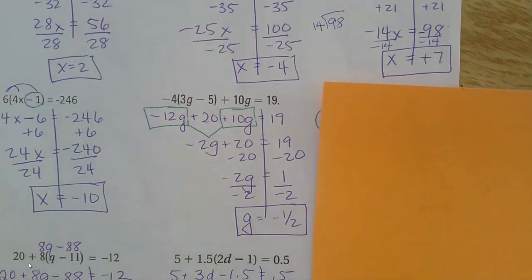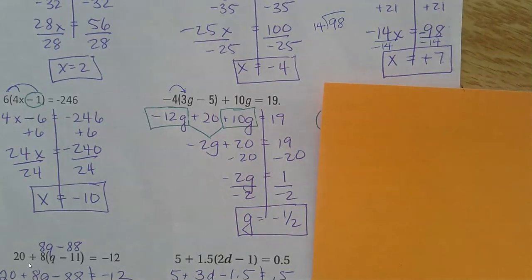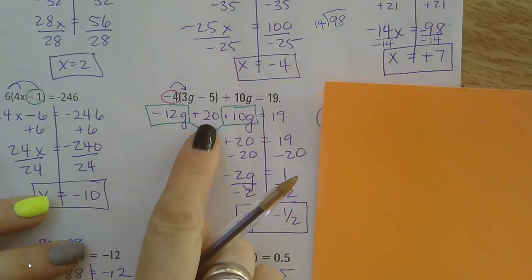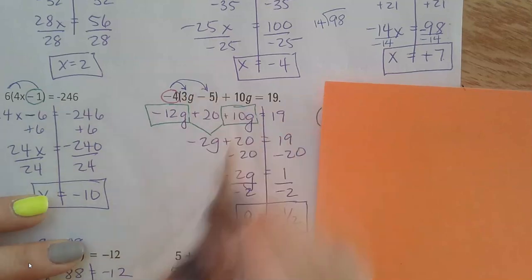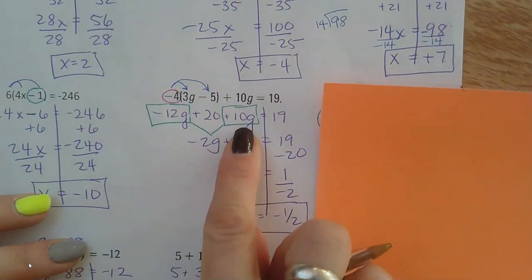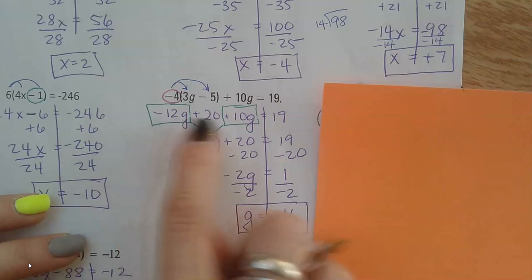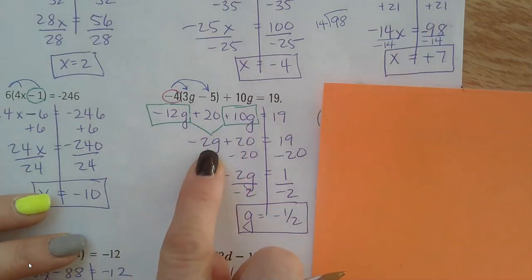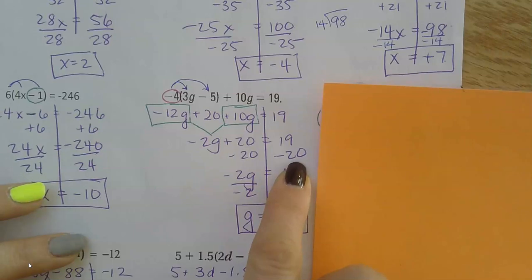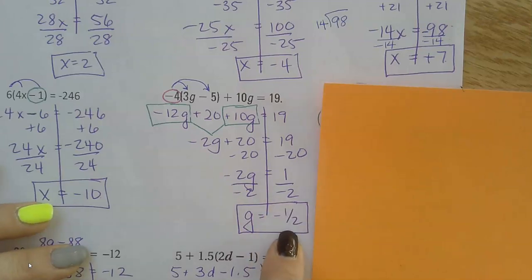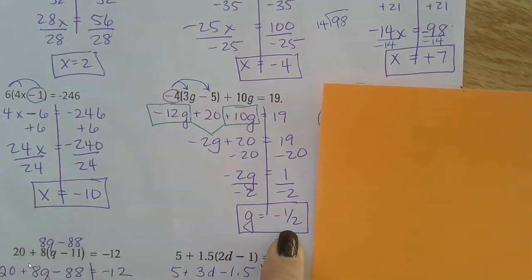Okay, this one. We did have to distribute. We were distributing a negative 4. So that gave me negative 12g and positive 20 when I distributed. And then bring down the plus 10g. Now I do have like terms. So I color coded those, boxed them, whatever. Realize that you have g's and g's that need to be put together first here. So negative 12 and 10 is 2g. And then plus 20. Then I can start canceling things out. Minus 20 on both sides. Then divide by negative 2 on both sides. And yes, we got a fraction. So could you possibly get a fraction answer? You could. Negative 1 half there.